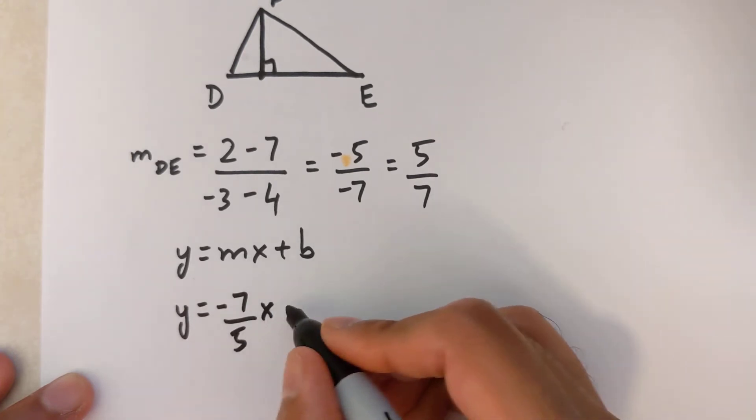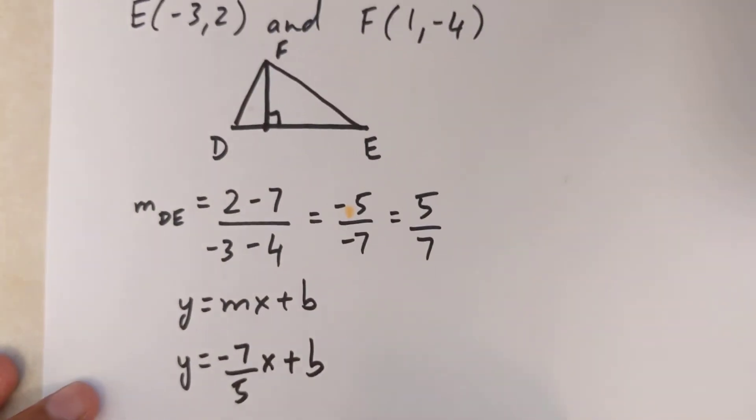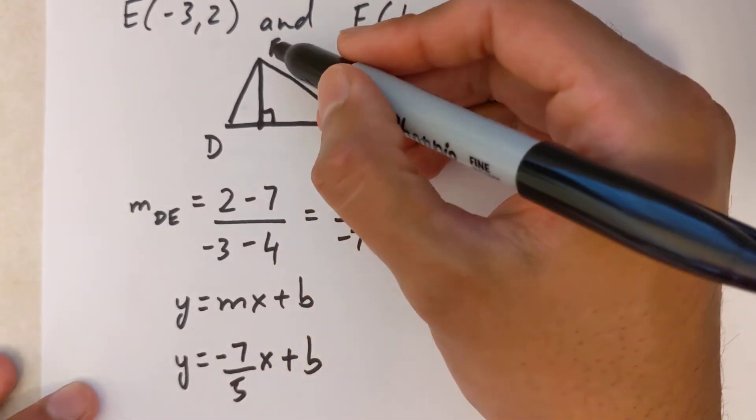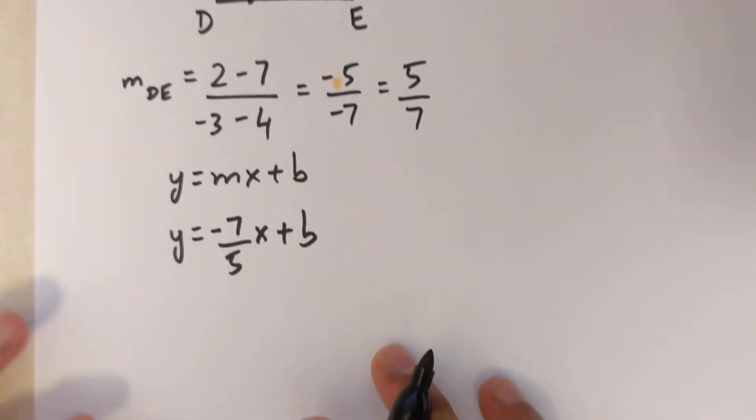Now the only point I can sub in this equation is F because F is the only point that I know on this line. So I'm going to sub in F into this equation.